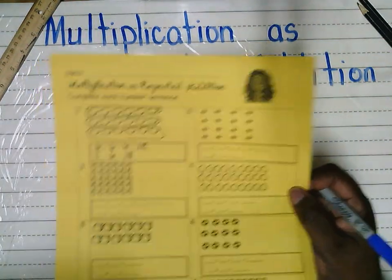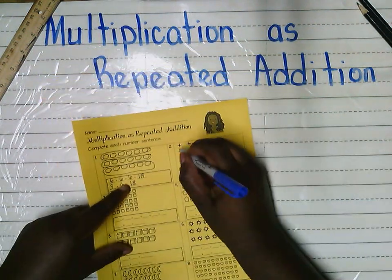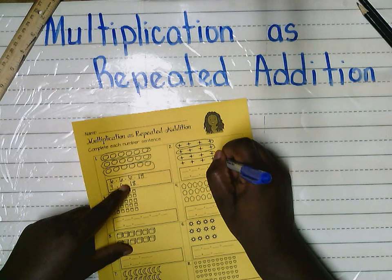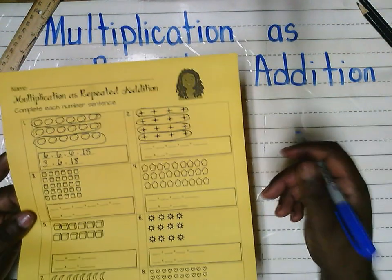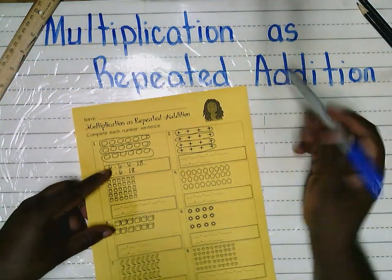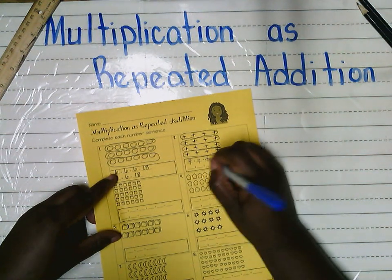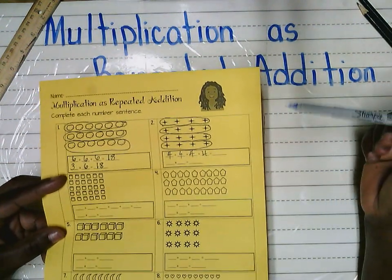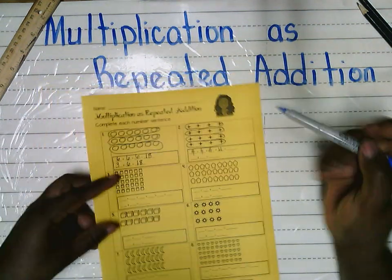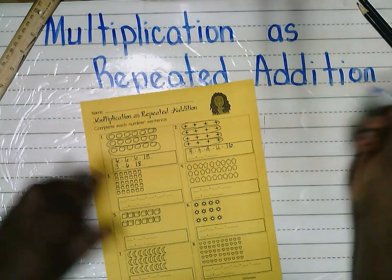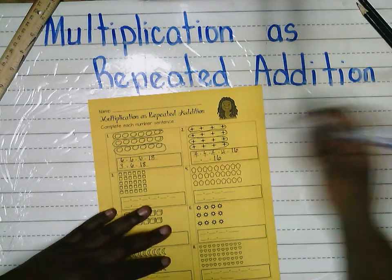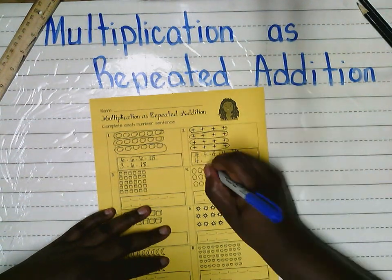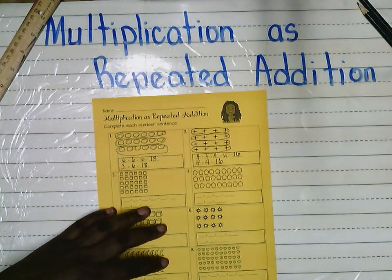Let's do this one together — I have some stars. You can circle the groups to help. I have one group, two groups, three groups, four groups. So I have four groups of stars, and each group has four: four plus four plus four plus four. Skip counting: four, eight, twelve, sixteen. So the product is sixteen. Four groups and four in each group: four times four equals sixteen.